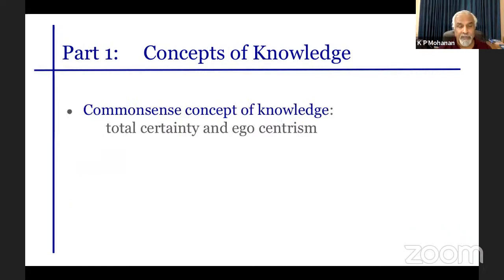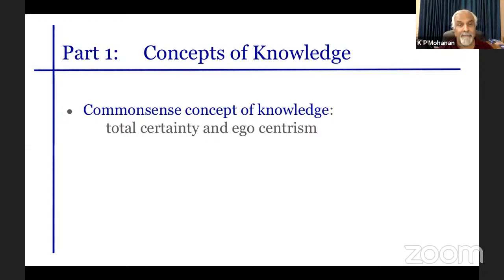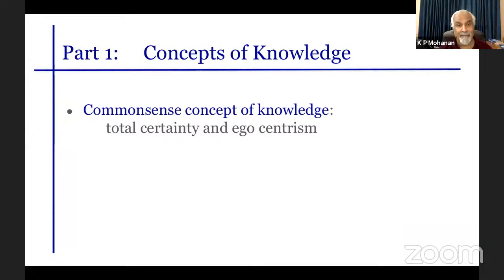One of the characteristics of common sense knowledge, embedded in the English verb 'know,' involves two important properties. One of them is total certainty. If I say 'I know that the train comes at 10,' I cannot say 'but I'm wrong,' because the verb 'know' requires that whatever follows must be absolutely true. I cannot say 'but I might be wrong' — that is impossible. This is total certainty.